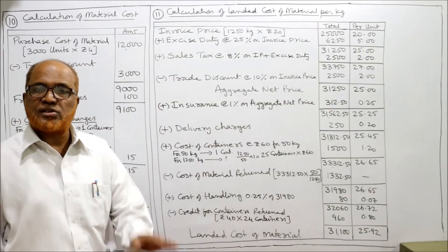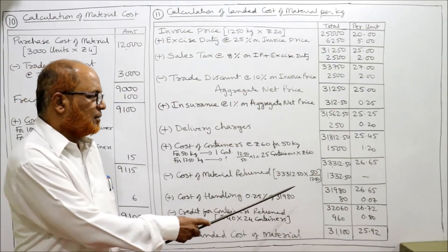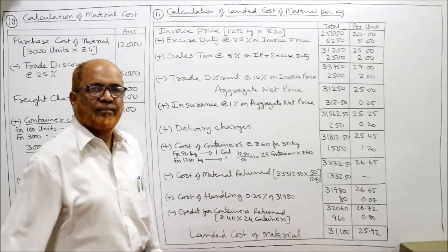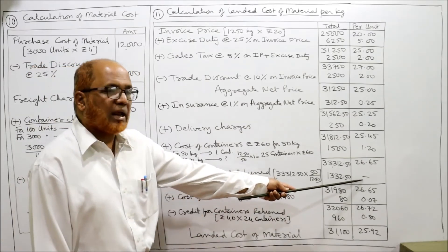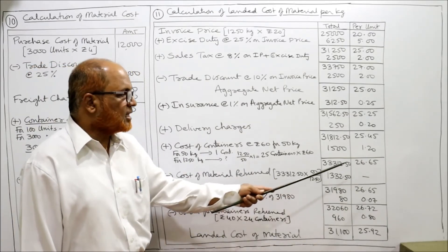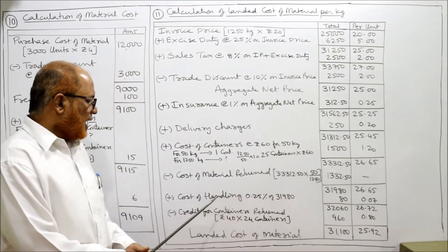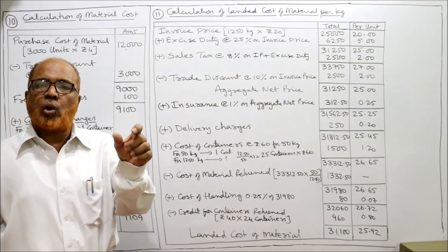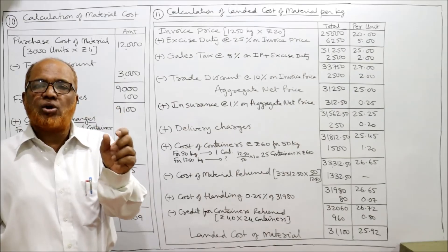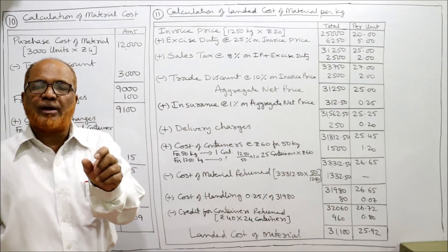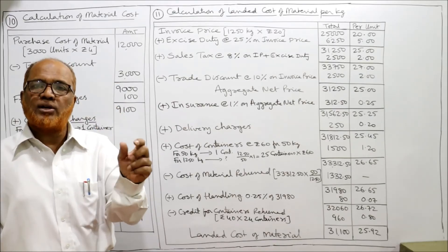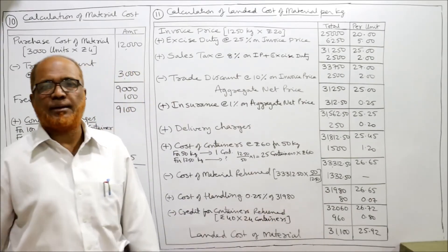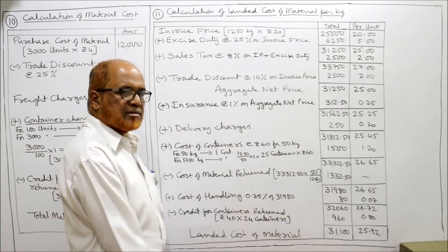Subtracting the cost of material returned: 33,312.5 − 1,332.5 = 31,980 rupees. We do not calculate per kilogram here as this is material returned. Now cost of loading, unloading, and handling is 0.25%. So 0.25% of 31,980 = 80 rupees approximately.